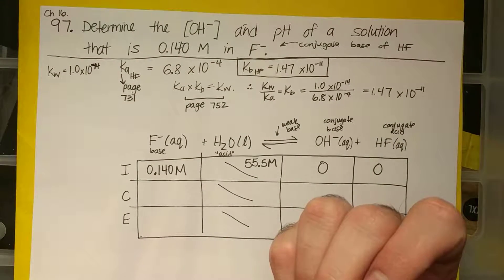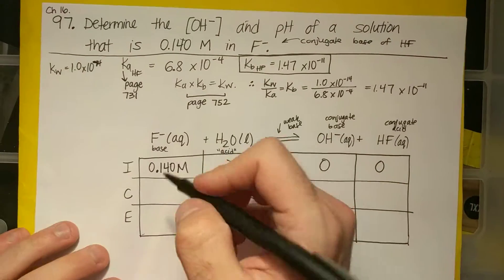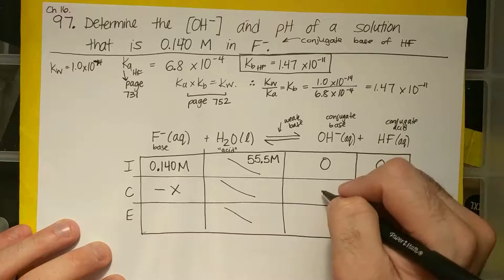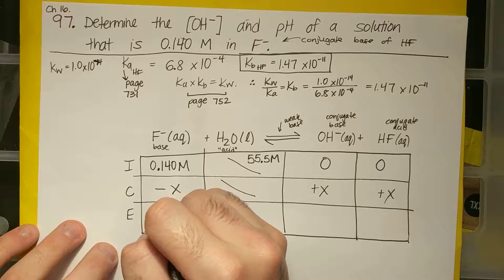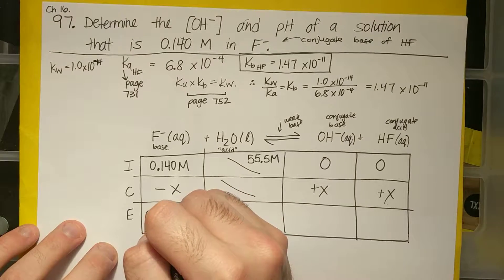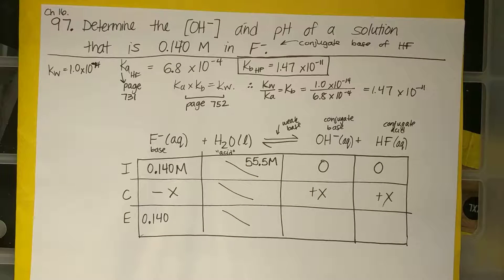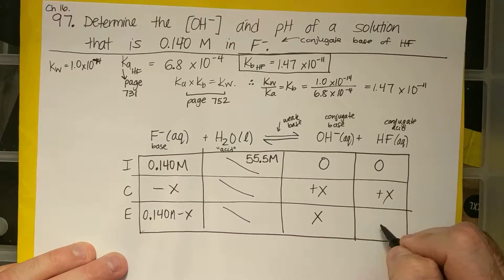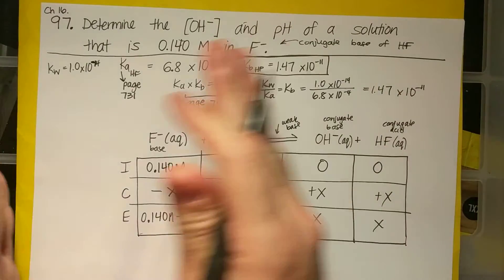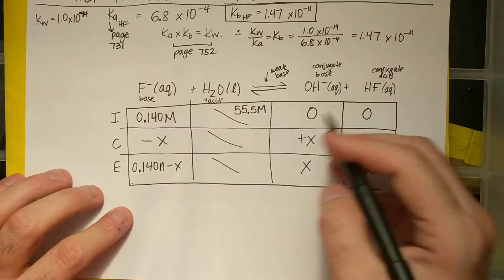So now if I go and do my ICE table, if this dissociates, or if I'm going from left to right, I have minus X as my change, plus X, plus X. And so I'll have 0.140, and this is just like we've done this so many times, you know what to do. So 0.15 molar minus X, X, X.